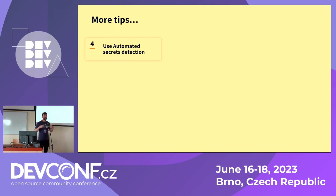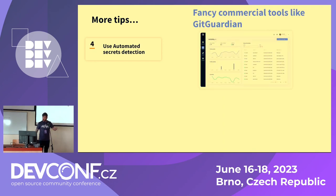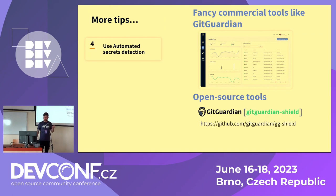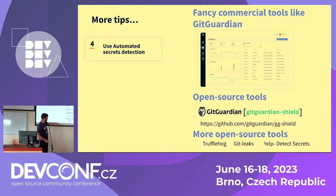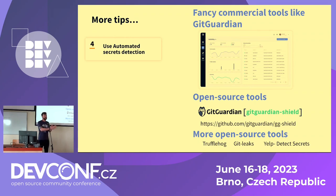Use automated secret detection. At this point there are a lot of really good secret detection tools, and many are open source. I work for GitGuardian so I'm totally biased, but we have commercial tools available with dashboards, as well as open source tools. There are lots of other open source tools too — TruffleHog, git-leaks — these can all detect secrets. All of these can be used to create git hooks to prevent you from committing secrets, and they can also be used to scan your directories. I used gg-shield to scan the mobile applications and other things.